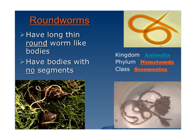Roundworms have long, thin, round, worm-like bodies, but they don't have any segments like the annelids did. These are the type of worms that mothers worry about when they don't let their children go barefoot — they're afraid they'll catch worms. Roundworms are also in the kingdom animalia, and they are in the phylum nematoda.